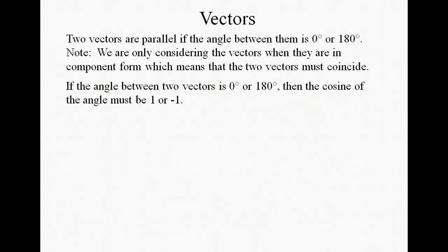So let's put it to some use. We want to find two vectors that are parallel. If they are parallel, then the angle between them is either 0 or 180 degrees. Or in other words, the two vectors coincide. Remember that we're only working with vectors here that are in their component form, so their starting point is at the origin, 0, 0.